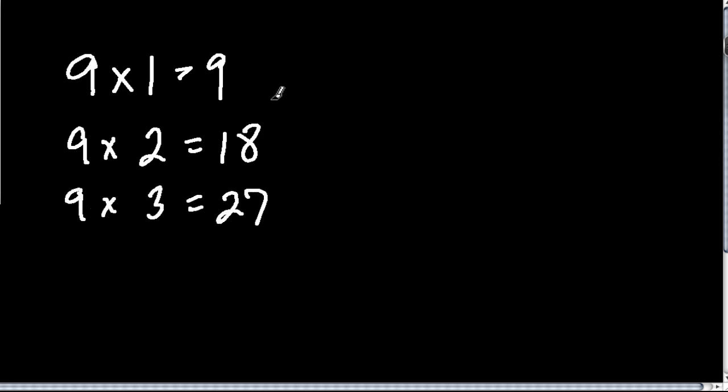We might start to see a pattern already. One thing to notice is that when you take 9 and multiply it by 1, you get 9, the first multiple of 9, and then 9 times 2 is 18, the second multiple of 9. Well, you might notice that 1 plus 8 equals 9, and then here 9 times 3 is 27, well, 2 plus 7 equals 9.